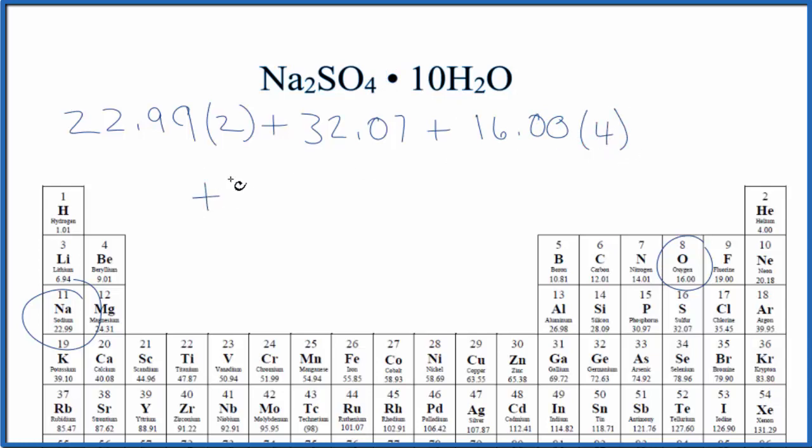And then to that, we'll add the molar mass of these 10 water molecules. So we'll say 10 times hydrogen is 1.01, and then we have two hydrogen atoms. Multiply that by two, plus the oxygen again, that was 16.00 grams per mole.